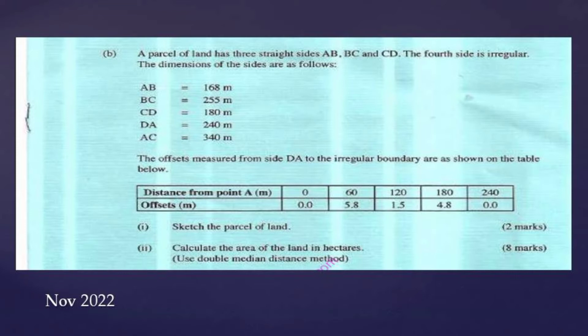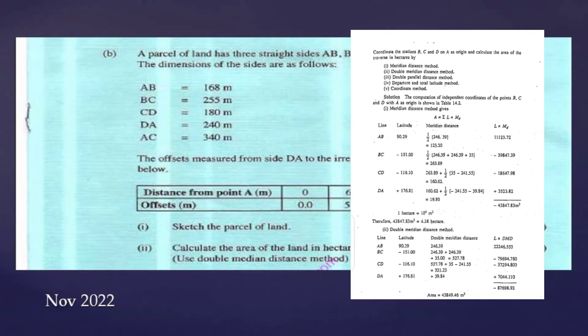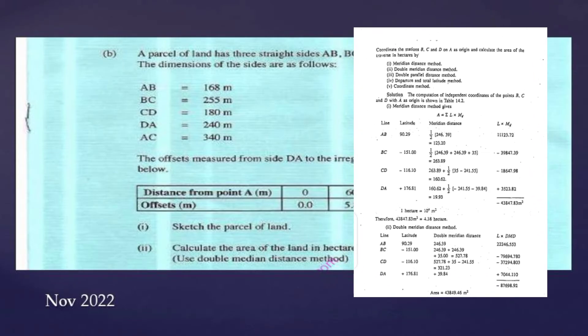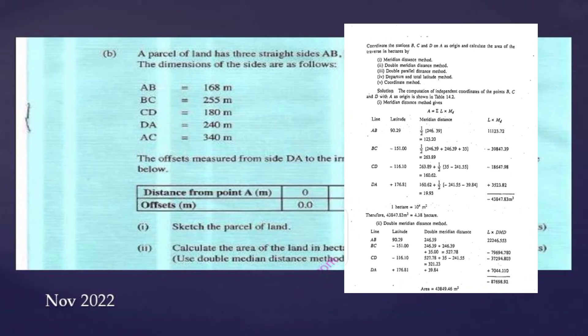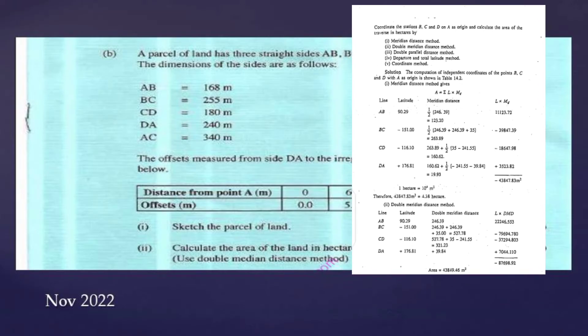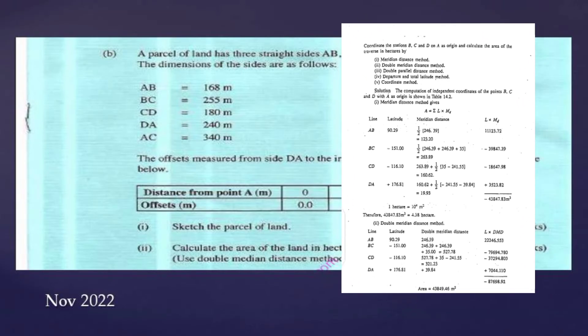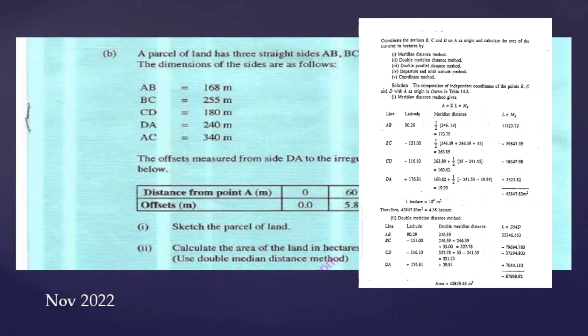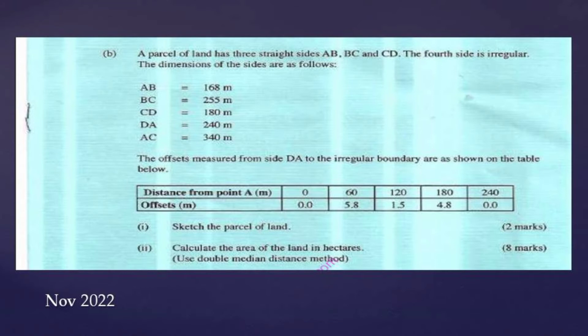It took me like three hours to find out the only method in surveying near to that is the double meridian distance method. And again, in order to use that formula, our question needs to have independent coordinates just like those questions involving traversing. But looking at this question, I'm not seeing any coordinate given to me, making it a little bit harder.